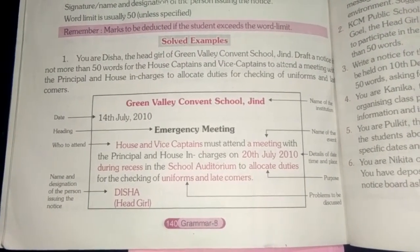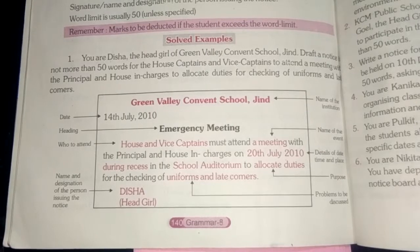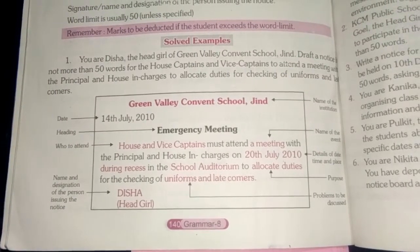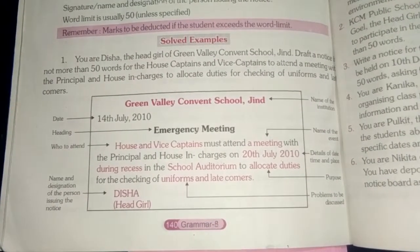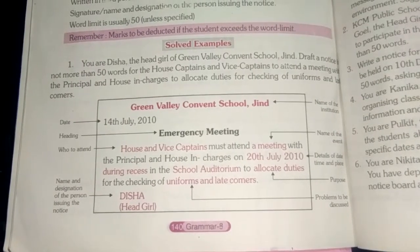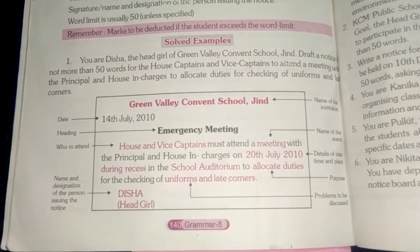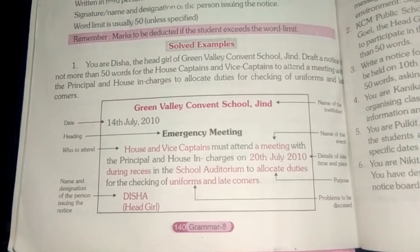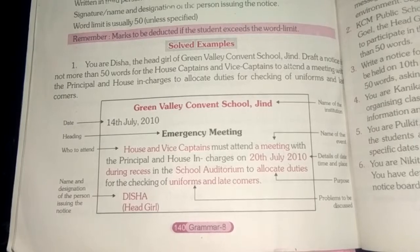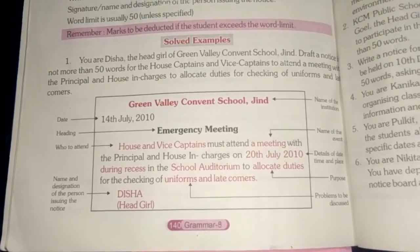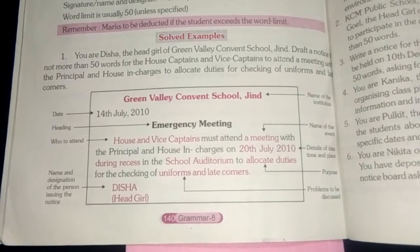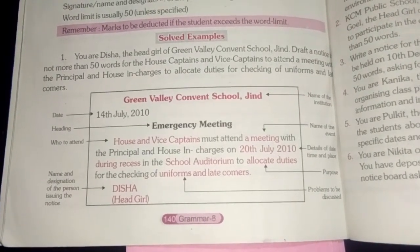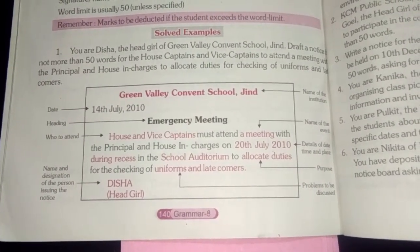On the next line, you will write the date on the left-hand corner — for example, 20th July 2010; you can change the date accordingly. In the middle, you need to write the agenda of the notice, i.e., the heading — for example, 'Emergency Meeting.' In some formats, the word 'NOTICE' is written in bold above the school name. After the date, you write the heading indicating why this notice is being issued — here, it is an emergency meeting.